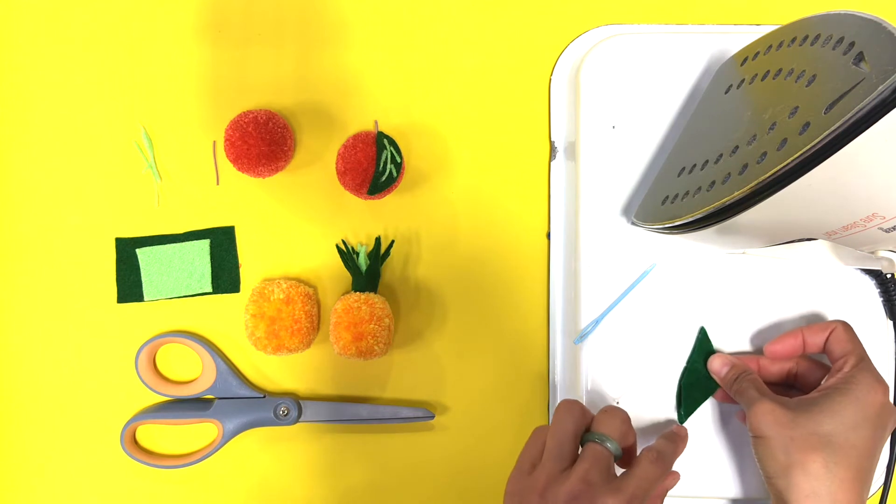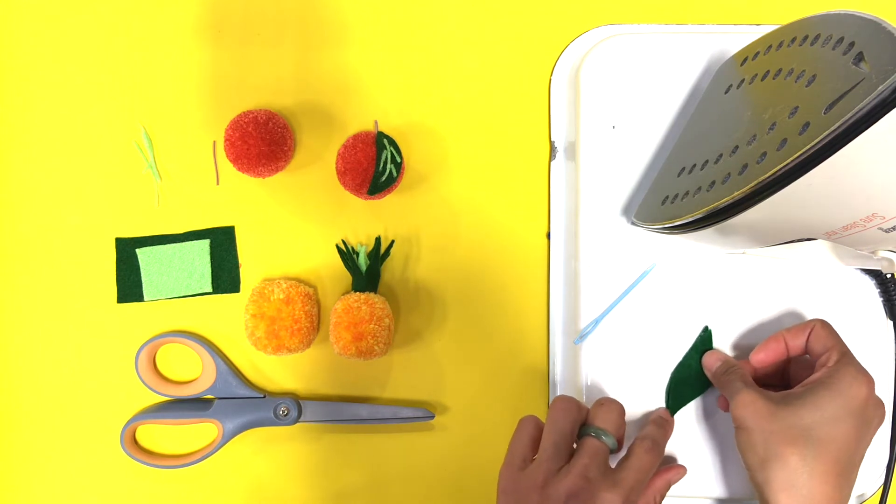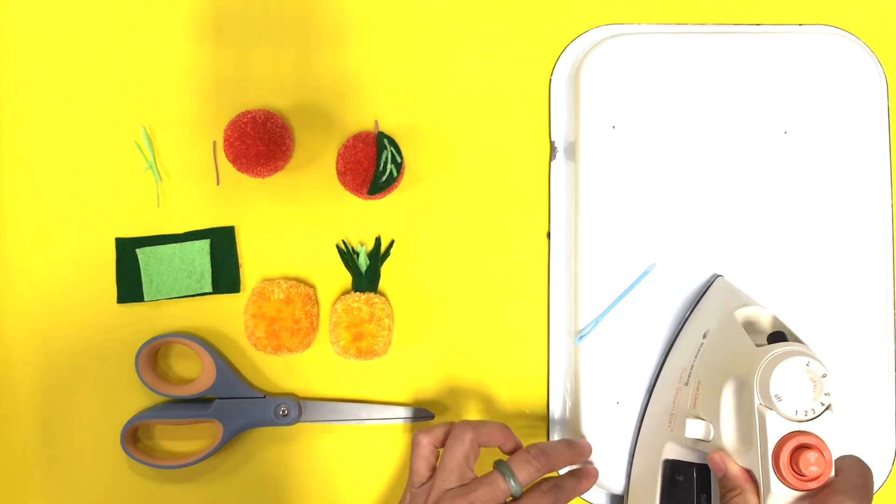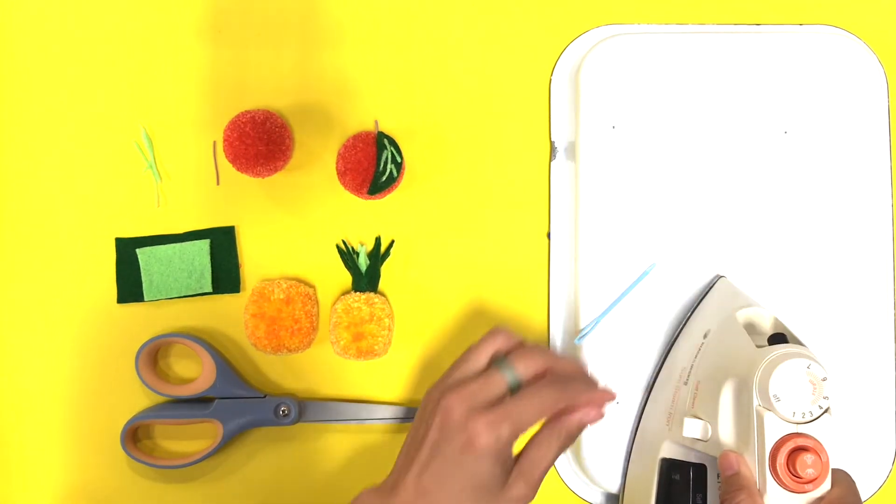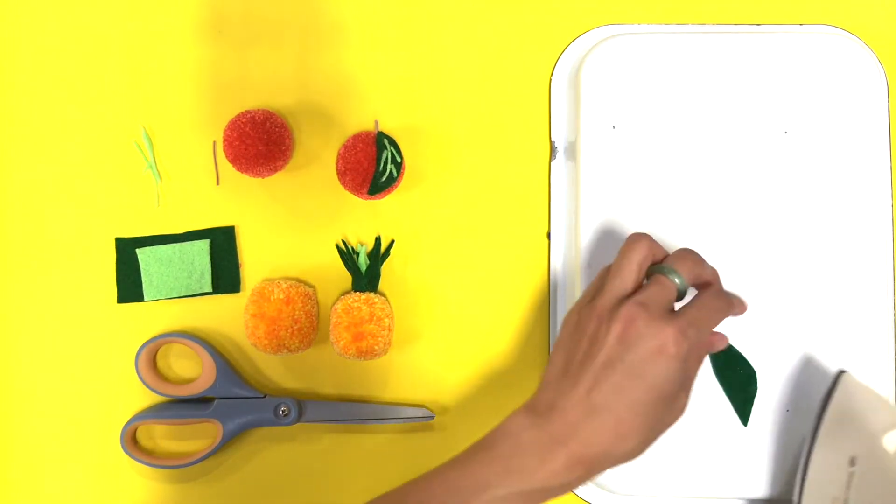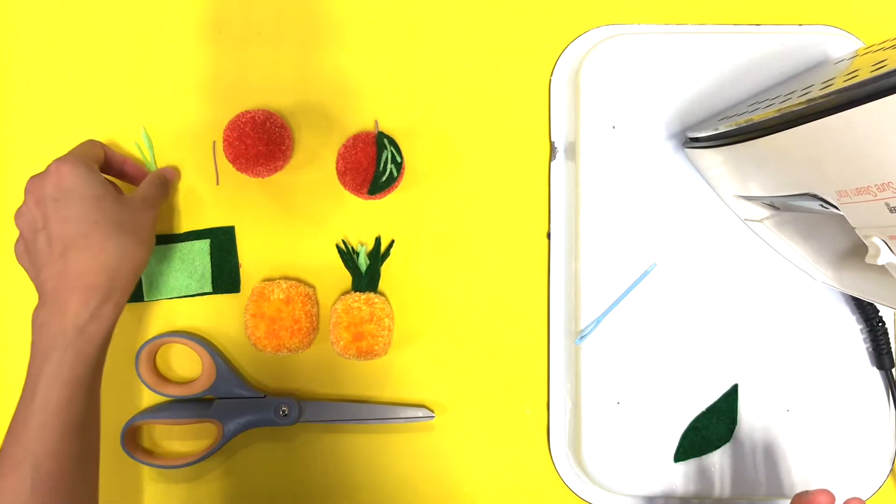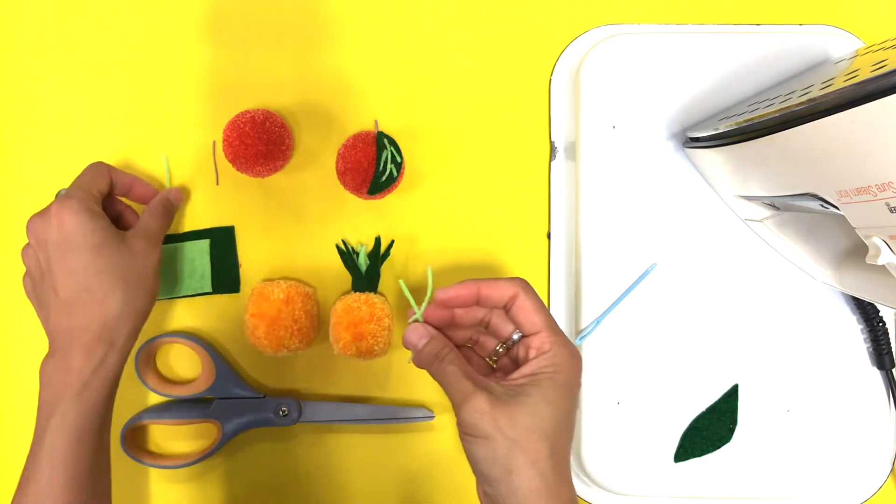I'm going to apply this. You could actually just use one piece of felt too if you want. I like to because I think it gives like a kind of a nice thick leaf look. So I just do a little bit of a press iron. If you have a hot glue gun you could use it as well, and then you don't need the heat.